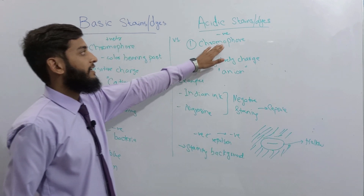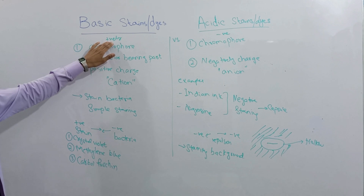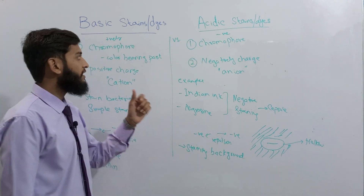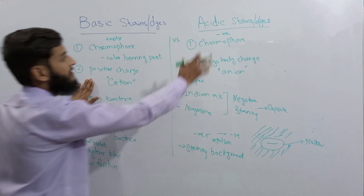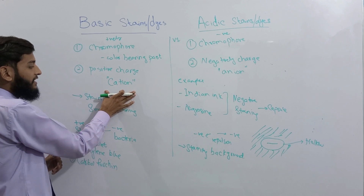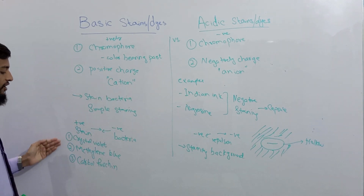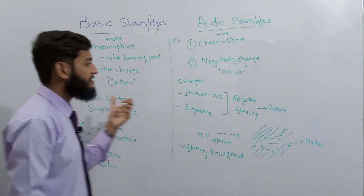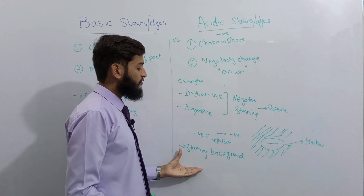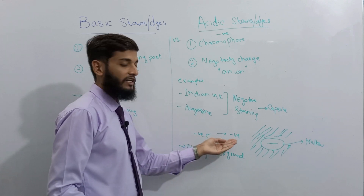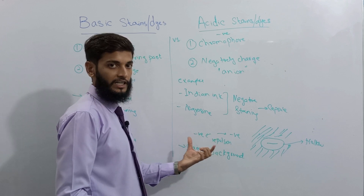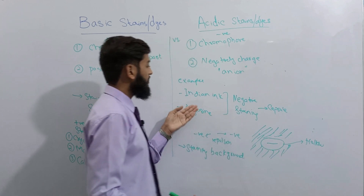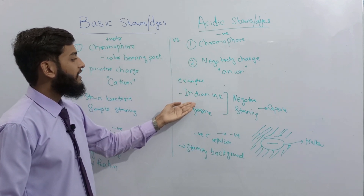In short: acidic stains contain a negative charge, basic stains contain a positive charge. Both of these stains contain a chromophore, which is the color-producing part. The second part is: acidic stains contain anions, basic stains contain cations. Examples of basic stains are crystal violet, methylene blue, and carbol fuchsin — these stains are used for staining bacterial cells. Acidic stains are used for staining the background because they have a negative charge and bacteria also have a negative charge, so there will be repulsion. This makes acidic stains very useful in negative staining procedures. Examples of acidic stains are Indian ink and nigrosine.